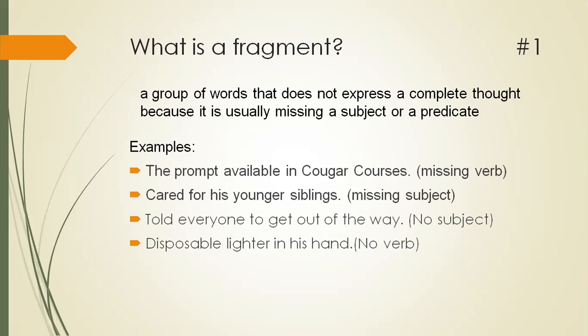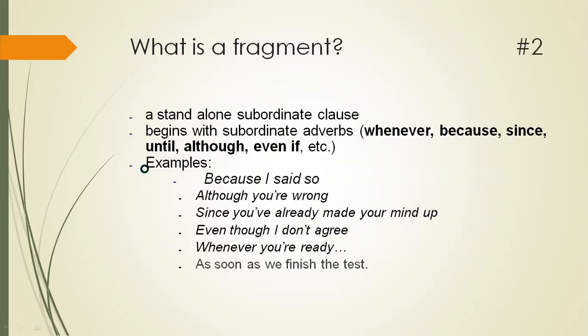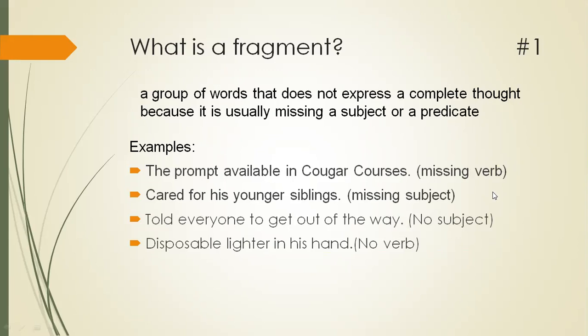For example: 'The prompt available in COBE courses' and 'disposable lighter in his hand' — in these two samples, we don't have a verb. The verb is missing. And 'cared for his younger siblings' and 'told everyone to get out of the way' — in these fragments, we don't have subjects.